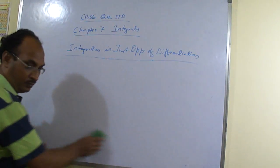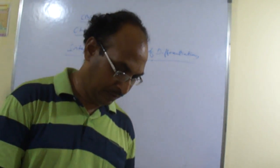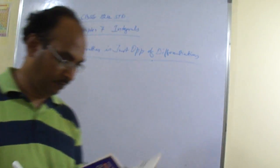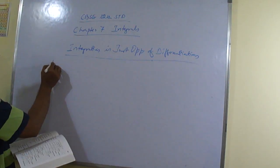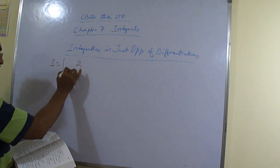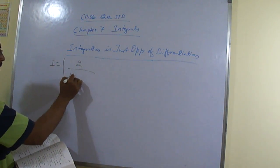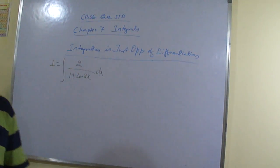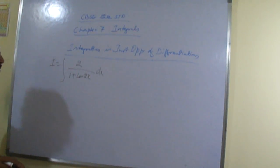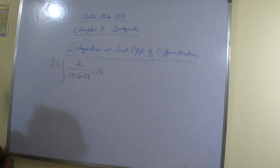Thanks. No final rule. 2 by 1 plus cos 2x dx. What will you be doing? Sir, do use a constant table. Okay. After that,